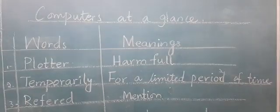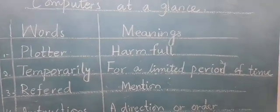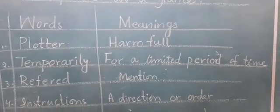Computers at a glance. Today we will learn words and their meanings. So the first one is Plotter: harmful. Temporarily: for a limited period of time.